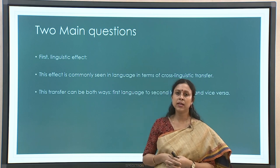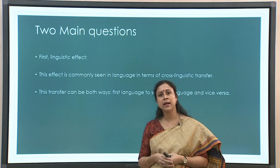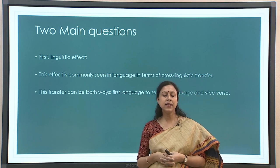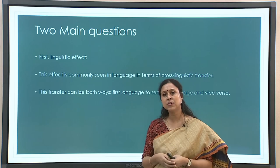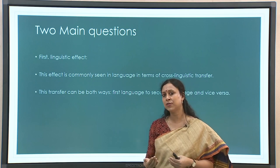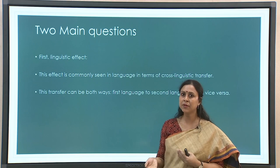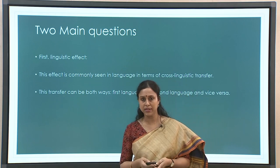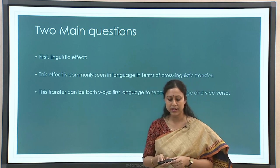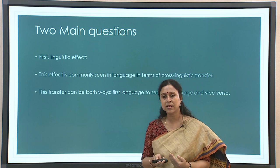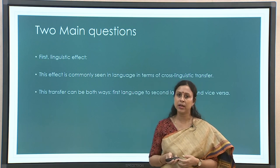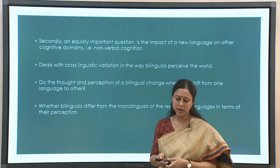Now in 2022, we look at bilingual cognition from two main standpoints. One is the question of the linguistic effect: it is almost common sense that if you speak two languages there will be an interrelationship between them, an impact of one language on the other. That impact can be from first language to second language or from second language to first language — it works both ways. This is what is called cross-linguistic transfer: transfer of grammatical aspects and concepts from L1 to L2 or L2 to L1.